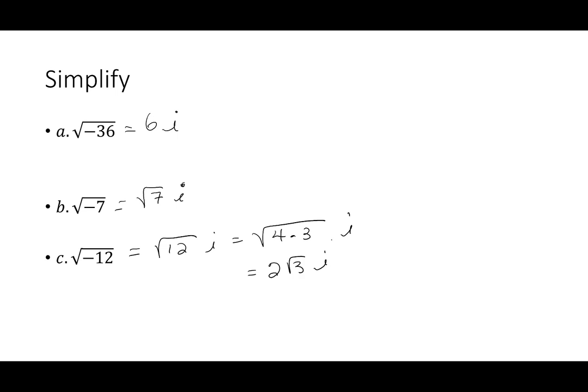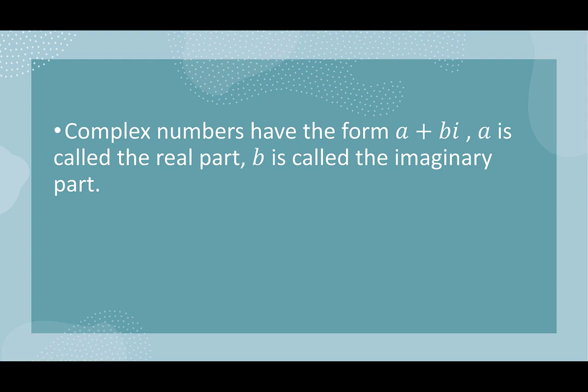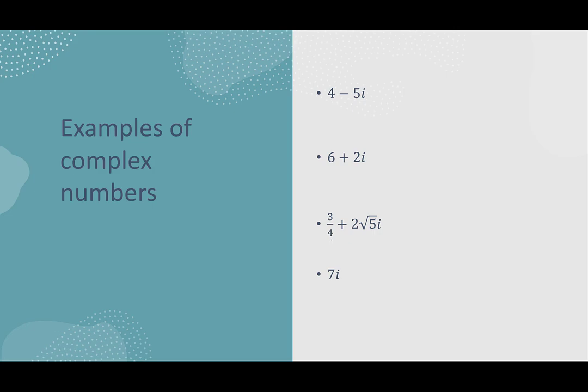We've dealt with imaginary numbers; now we're going to increase that a little bit and talk about complex numbers. Complex numbers have the form a plus bi, where a is called the real part and b is called the imaginary part. Both a and b are real numbers; the only difference is that I have an i attached to the b. Examples include 4 minus 5i, 6 plus 2i, three-fourths plus 2 square root of 5i, or just 7i.